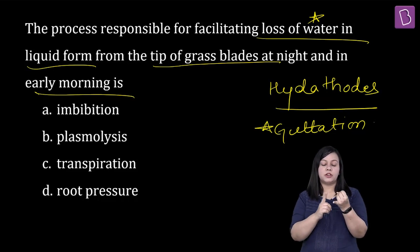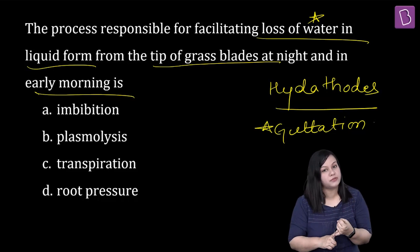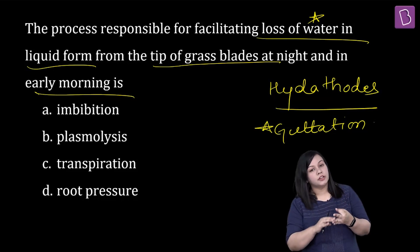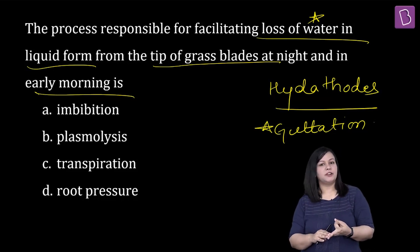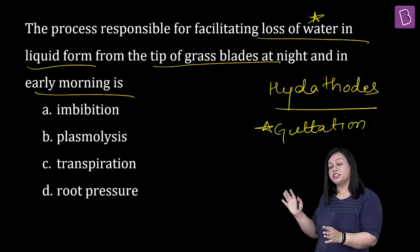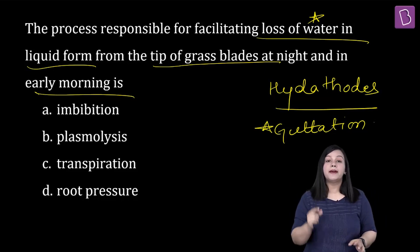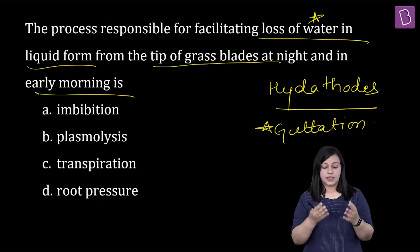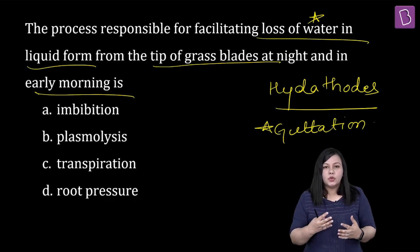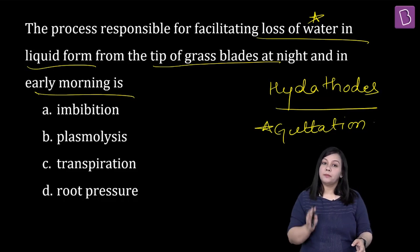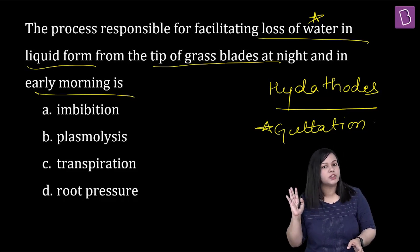80 to 85% of transpiration happens with the help of stomata. Uske alawa do aur types ke transpiration hote hain — cuticular transpiration and lenticular transpiration. That is loss of water in the form of vapor. We are talking about guttation in the form of liquid. Main baar baar is point pay reiterate kar rahi hoon, kyunki bacche aise questions ke time pay tend to lose the point here. Unhe yaad rakhna hai ki question mein exactly puchha kya gaya hai.